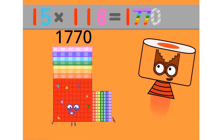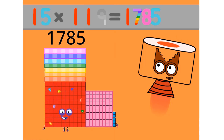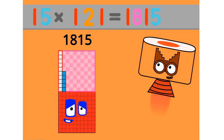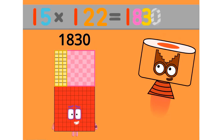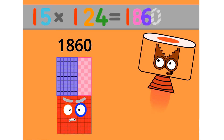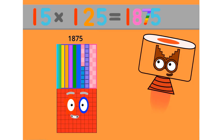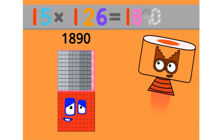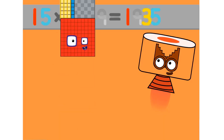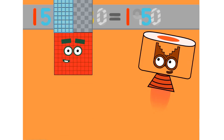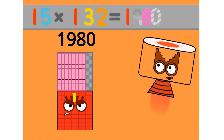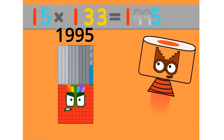15 x 101 equals 1515. 15 x 102 equals 1530. 15 x 103 equals 1545. 15 x 104 equals 1560. 15 x 105 equals 1575. 15 x 106 equals 1590. 15 x 107 equals 1605. 15 x 108 equals 1620. 15 x 109 equals 1635. 15 x 110 equals 1650.